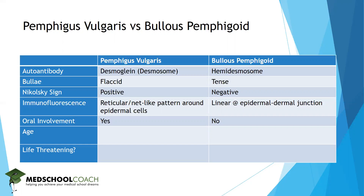In terms of oral involvement, this typically denotes something more serious, so you'll see it in pemphigus vulgaris and not in bullous pemphigoid. For age distribution, pemphigus vulgaris tends to affect a younger group — roughly 30 to 60 year olds — compared to a somewhat older population in bullous pemphigoid.